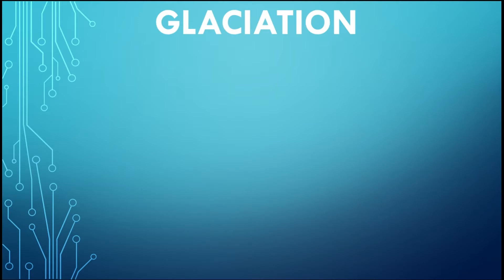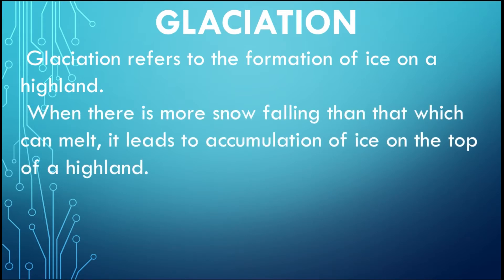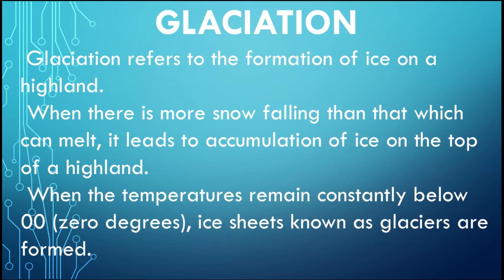So what is glaciation? Glaciation refers to the formation of ice on a highland when there is more snow falling than can melt. It is the accumulation of ice on top of these highlands. When temperatures remain constantly below zero degrees, ice sheets known as glaciers are formed.